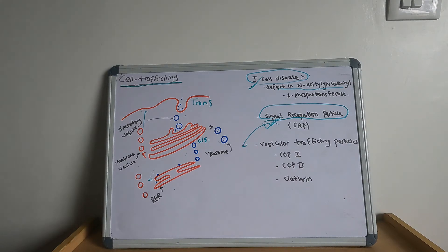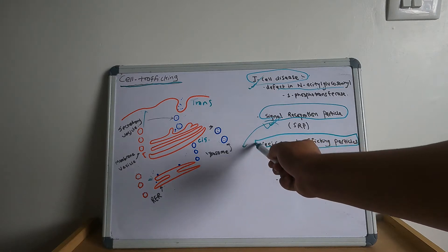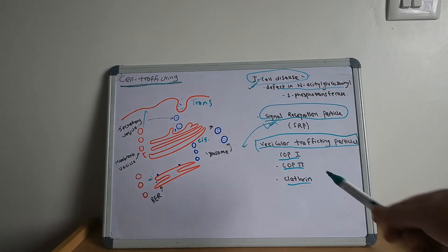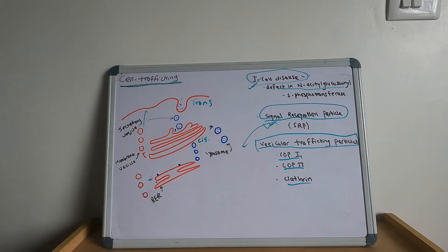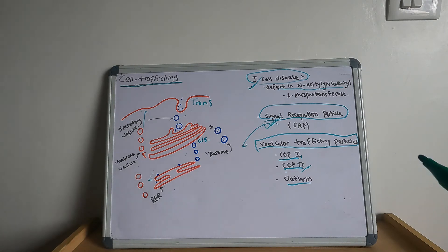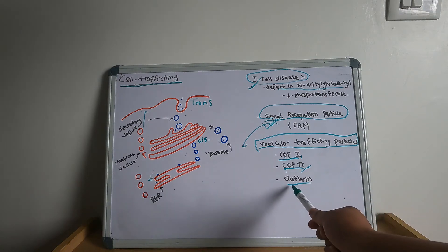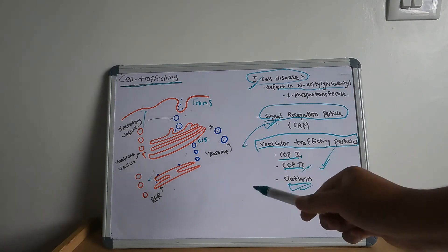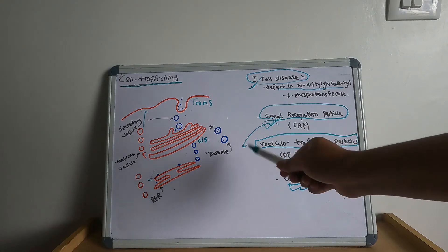Now let us move toward vesicular trafficking proteins. The vesicular trafficking proteins include COP1, COP2, and clathrin. COP stands for coated protein. COP1 mediates retrograde transport from Golgi to Golgi. COP2 mediates anterograde transport from the endoplasmic reticulum to the cis Golgi. Clathrin mediates transport from the Golgi to lysosomes or from the plasma membrane to endosomes, which is receptor-mediated endocytosis — for example, low density lipoprotein receptor activity.